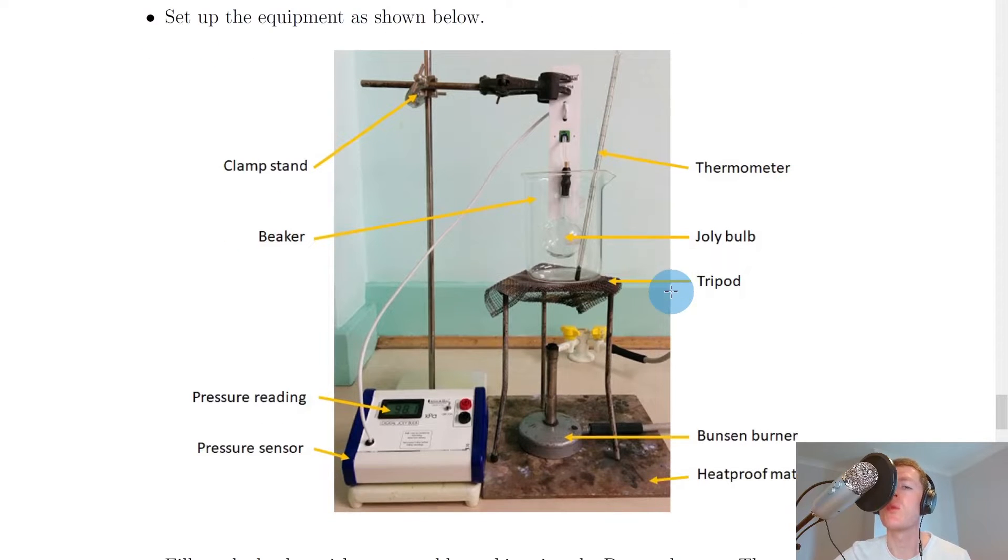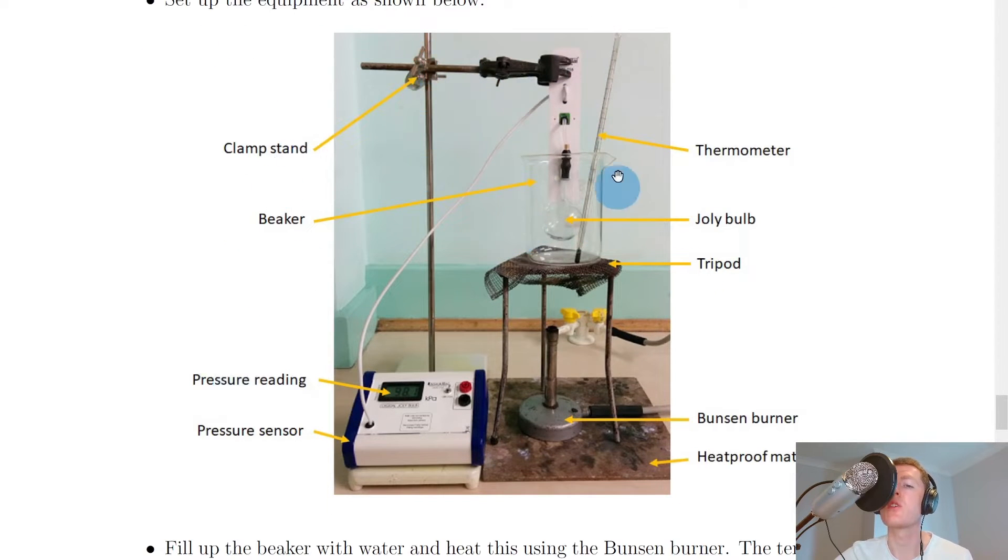So I'm going to show you what some of these things are. So here we've got a clamp stand which is holding our jolly bulb in the beaker, which is this glass bulb full of gas i.e. air. We've got a thermometer in the beaker and we've also got a tripod which is sitting on a heatproof mat with a Bunsen burner underneath it. We've then got a pressure sensor just like the one we saw in Boyle's Law which has a screen giving us the pressure reading in kilopascals but this time there's no syringe attached to the pressure sensor but we do have a cable connecting the pressure sensor to the jolly bulb i.e. it's connected to the gas, the air inside the jolly bulb. So remember the volume of the gas in the jolly bulb should stay the same, we're not changing that.